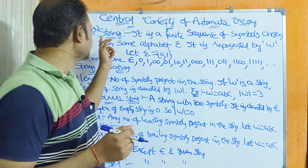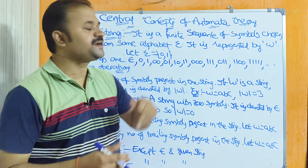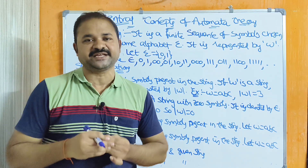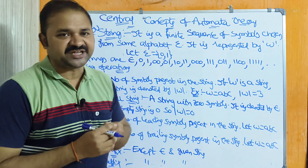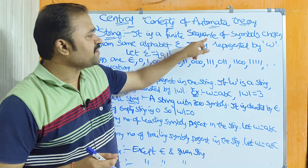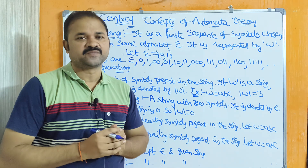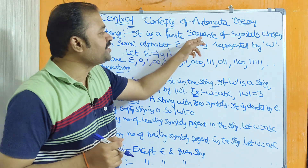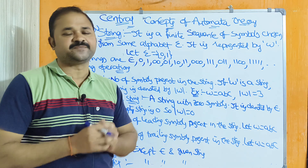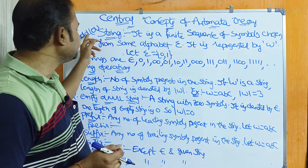Let us discuss about string in automata theory. String concept comes under the central or basic concepts of automata theory. First, let's see what is a string. A string can also be called as a word. String is a finite sequence of symbols chosen from some alphabet sigma. String is represented by w, because another name for the string is word.